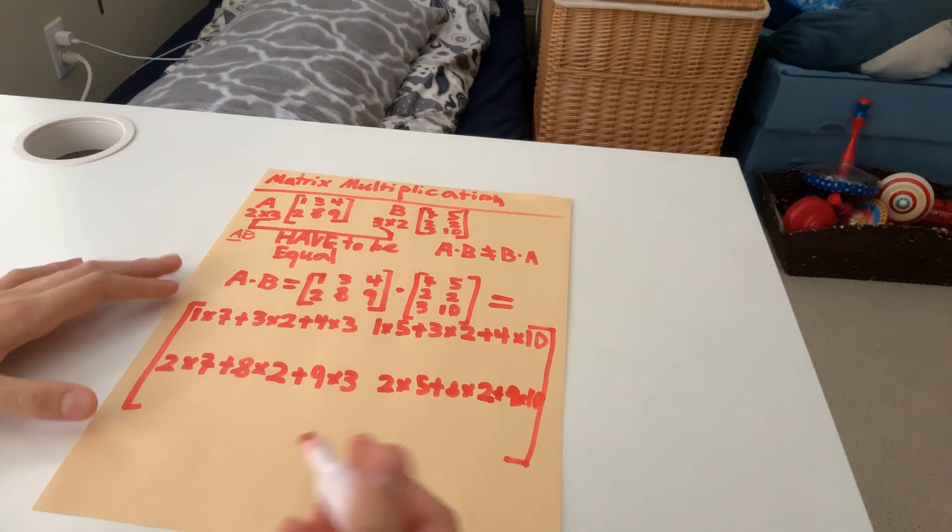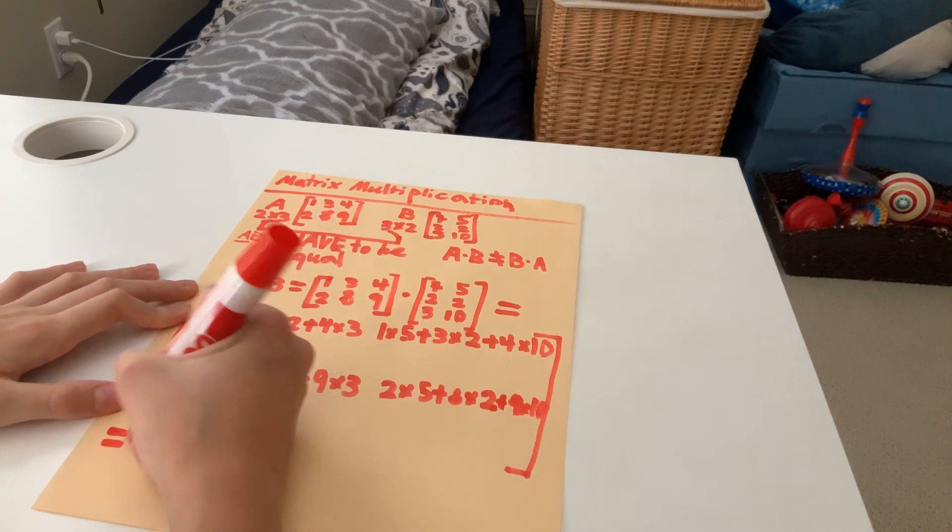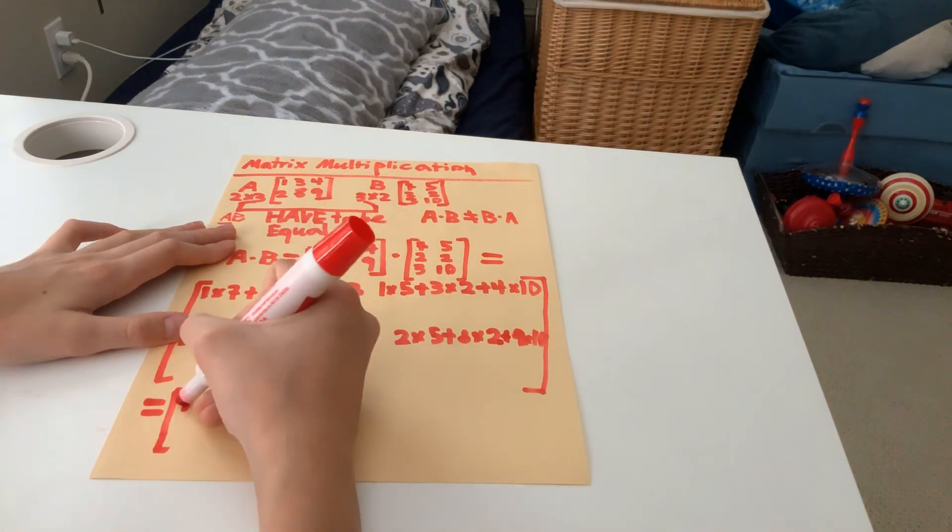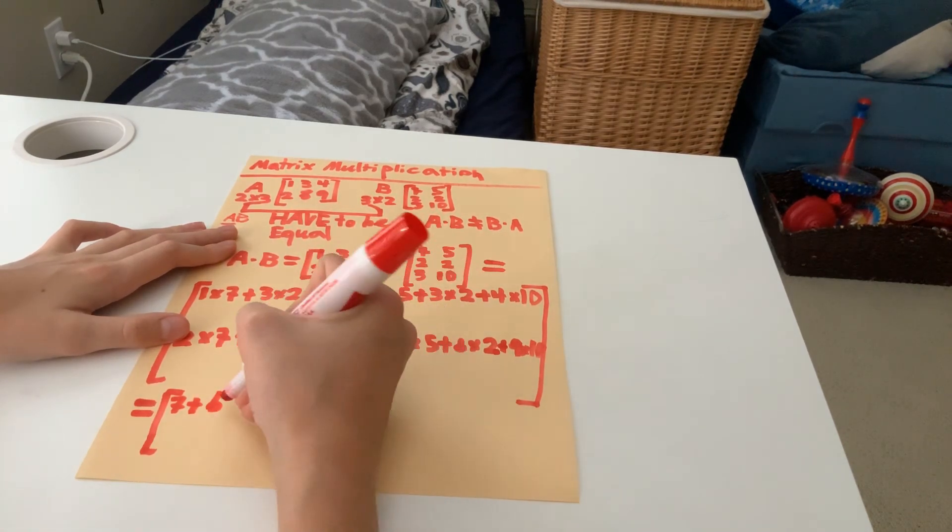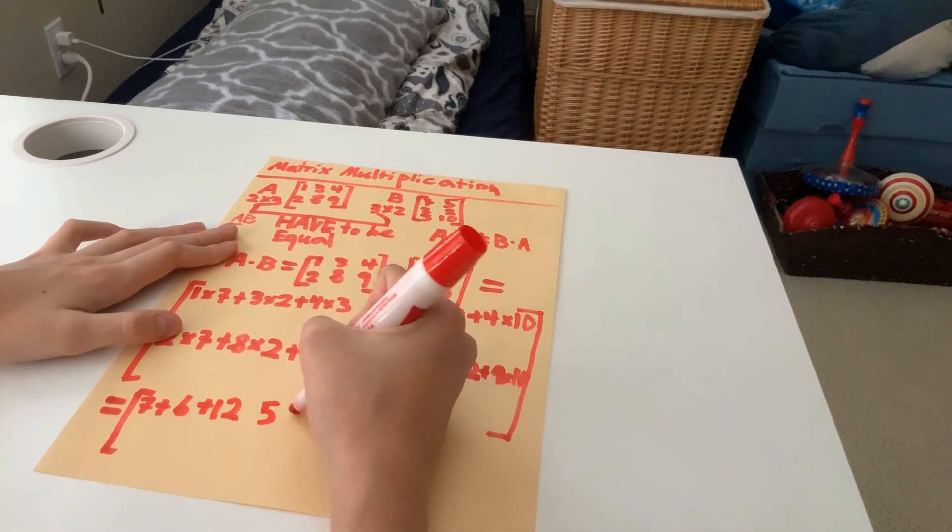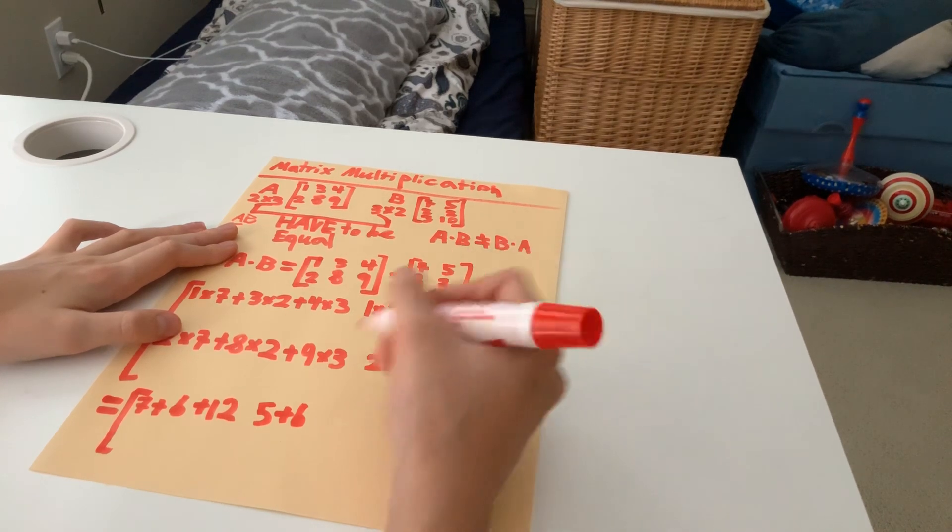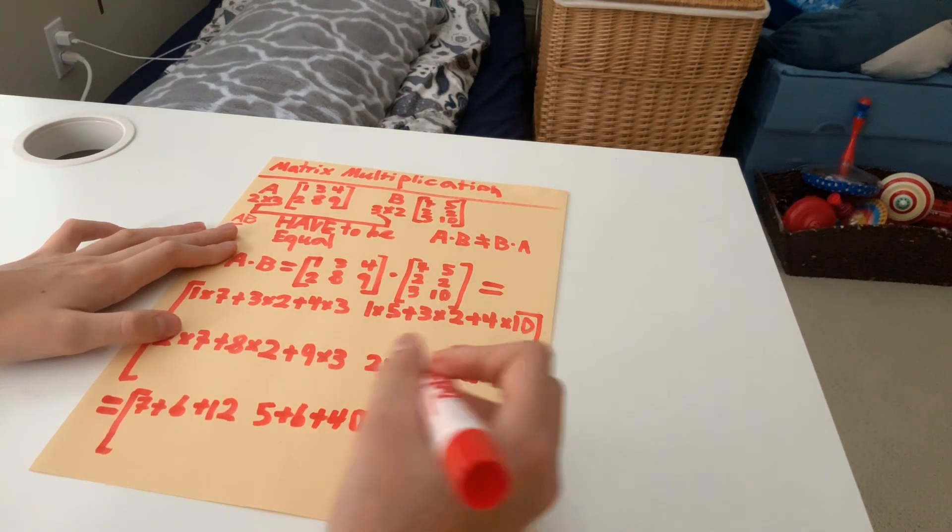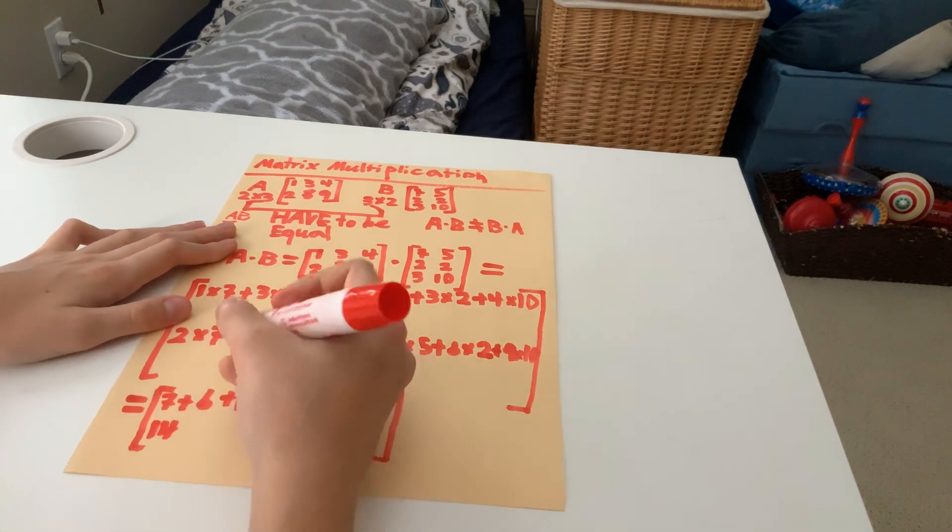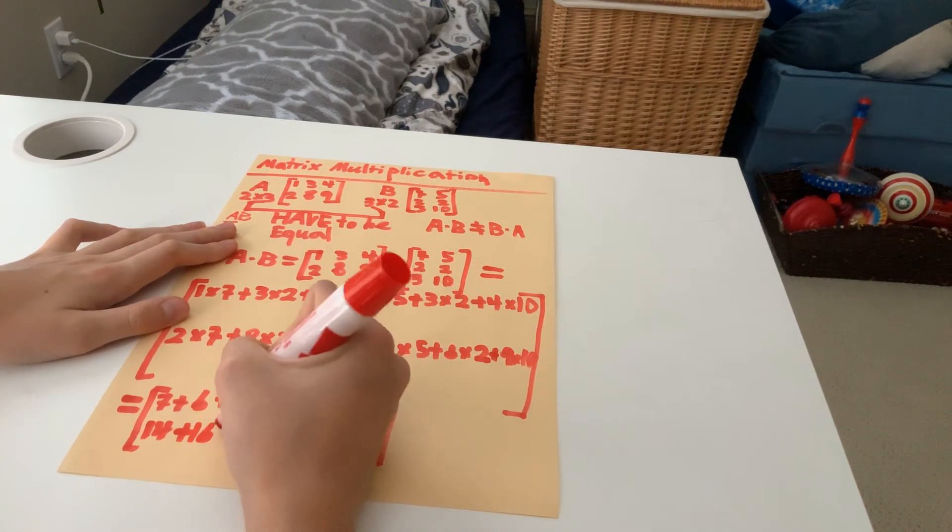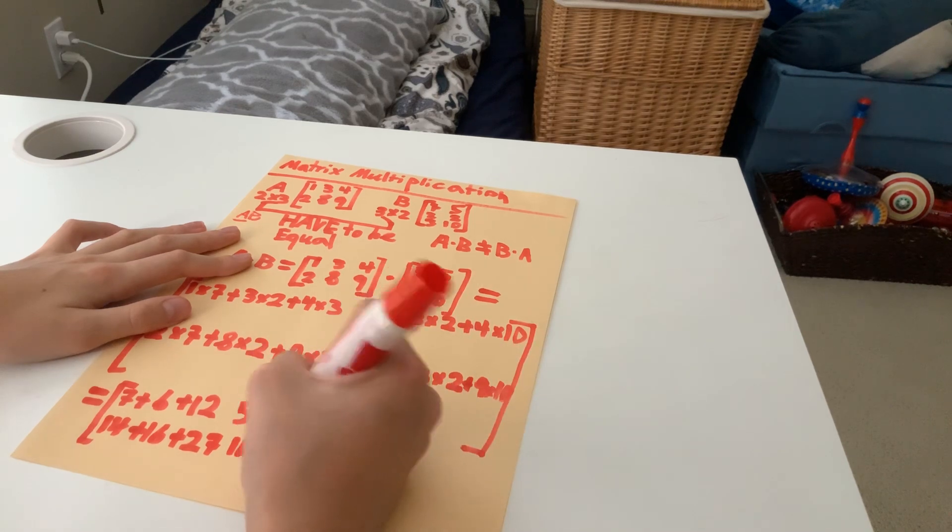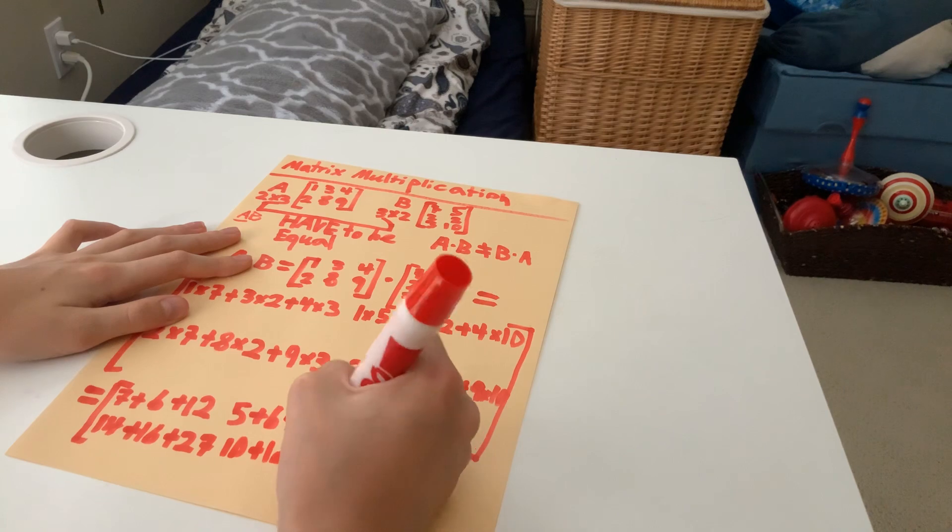So now, let's quickly simplify. It should be rather simple. So, let's simplify it like this first. So, 1 multiplied by 7. That is 7 plus 3 multiplied by 2. That is 6 plus 4 multiplied by 3, 12. Head to the next term. 1 multiplied by 5, 5. 3 multiplied by 2, 6. 4 multiplied by 10, 40. We can cut it off here. 2 multiplied by 7, 14. Can you see? Yes. 8 multiplied by 2, 16. Finally, 9 multiplied by 3, 27. Last term. 2 multiplied by 5, 10. 8 multiplied by 2, 16. 9 multiplied by 10, 90.